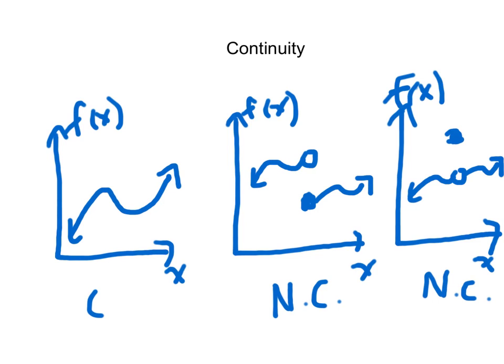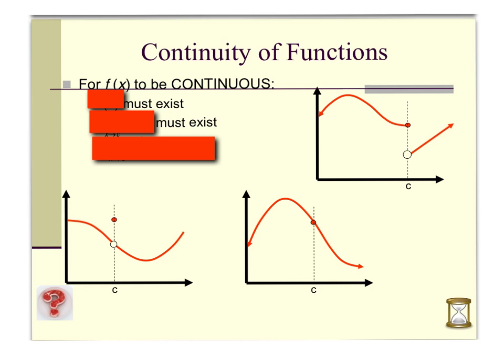Mathematicians looking at this said we need a formal way of describing or deciding whether a function is continuous. We don't always have a graph to look at — we need some way to determine whether a function is continuous by looking at the equation. So let's take a look at some functions and formally define what really makes a function continuous, what really makes it a graph you can draw without lifting up a pencil.